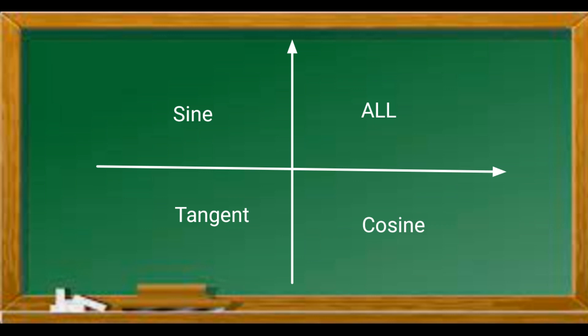An easy way to remember is saying all school teachers curse. The first letter in the words state which ratio is in which quadrant anticlockwise. A - all, S - sine, T - tangent, and C - cosine.